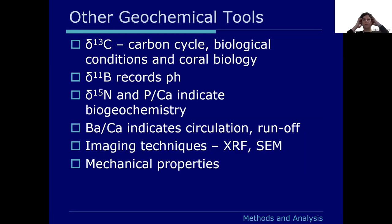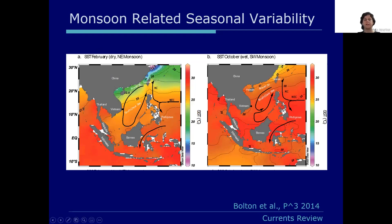Other geochemical tools we use include delta C13, which looks at the carbon cycle and co-biology; delta 11B, which gives records of pH; nitrogen and phosphorus for biogeochemistry; barium for circulation and runoff; and imaging techniques looking at how changes to organic content in the water column have changed back through time.